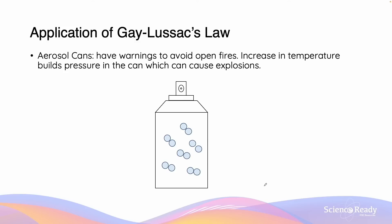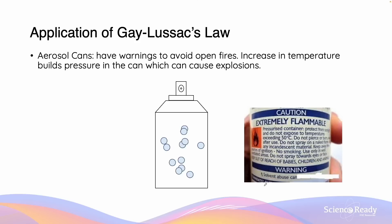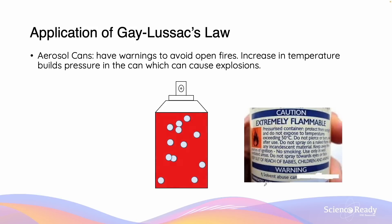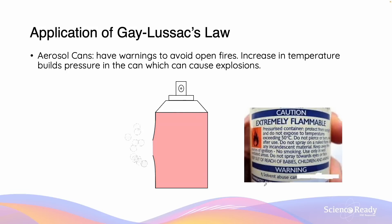Another example of Gay-Lussac's law in action are aerosol cans. Aerosol cans have warning labels to avoid open flames. This is because aerosols are flammable and can explode when exposed to high temperatures. Like with the pressure cooker, there are gas particles moving on the inside of the can, meaning there is a pre-existing pressure. If we increase the temperature too dramatically, the pressure inside the container will increase to the point where the structural integrity of the container can no longer be maintained, and the gas in the aerosol can can explode out through an opening.